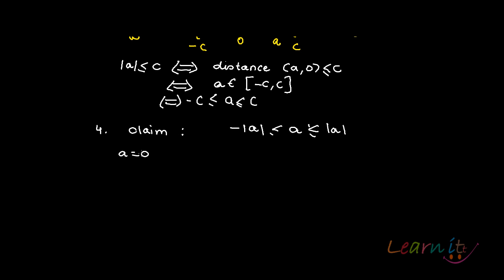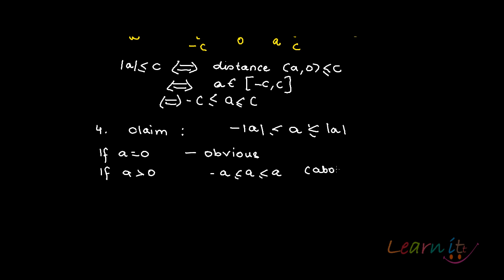If a is 0, there is nothing to prove — it's pretty obvious. If a is greater than 0, then the inequality becomes: a lies between minus a and a, which is true because a is greater than 0, as we've seen in the previous property.